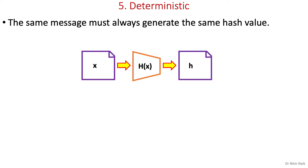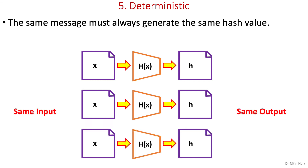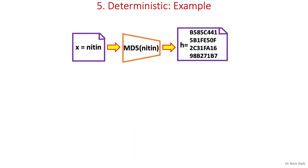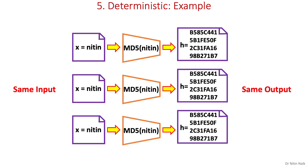The next property is deterministic. It means that the same message must always generate the same hash value using the same hash function. If I provide input x again and again to the hash function, it should always generate hash value h. For example with MD5, if I provide input 'nitin' again and again to the MD5 hash function, it should always generate the same hash value as shown here.